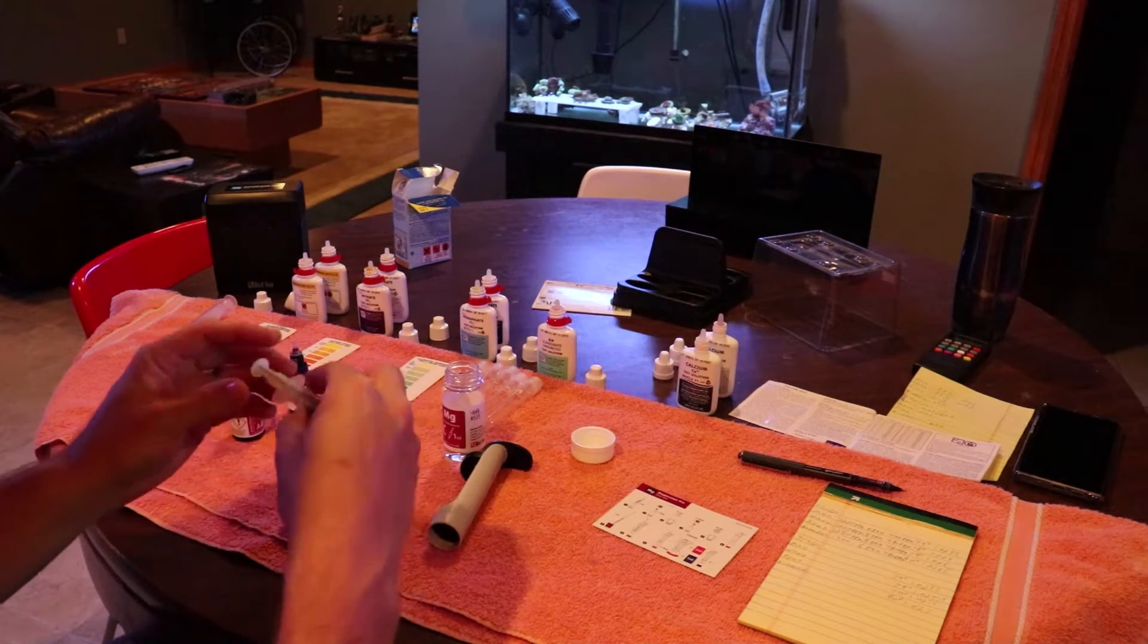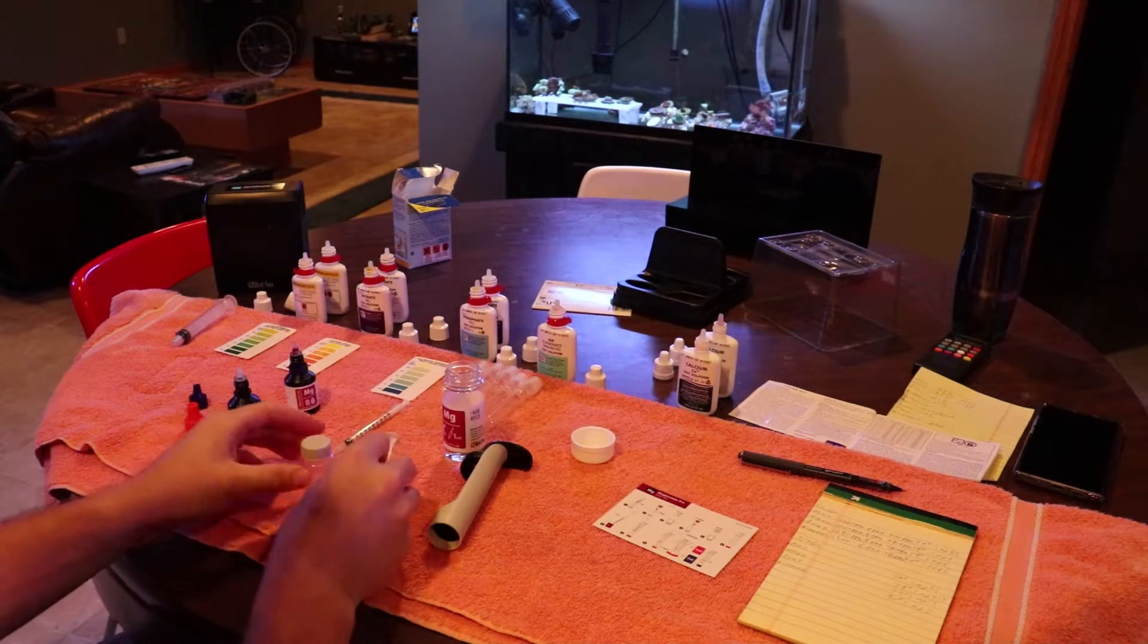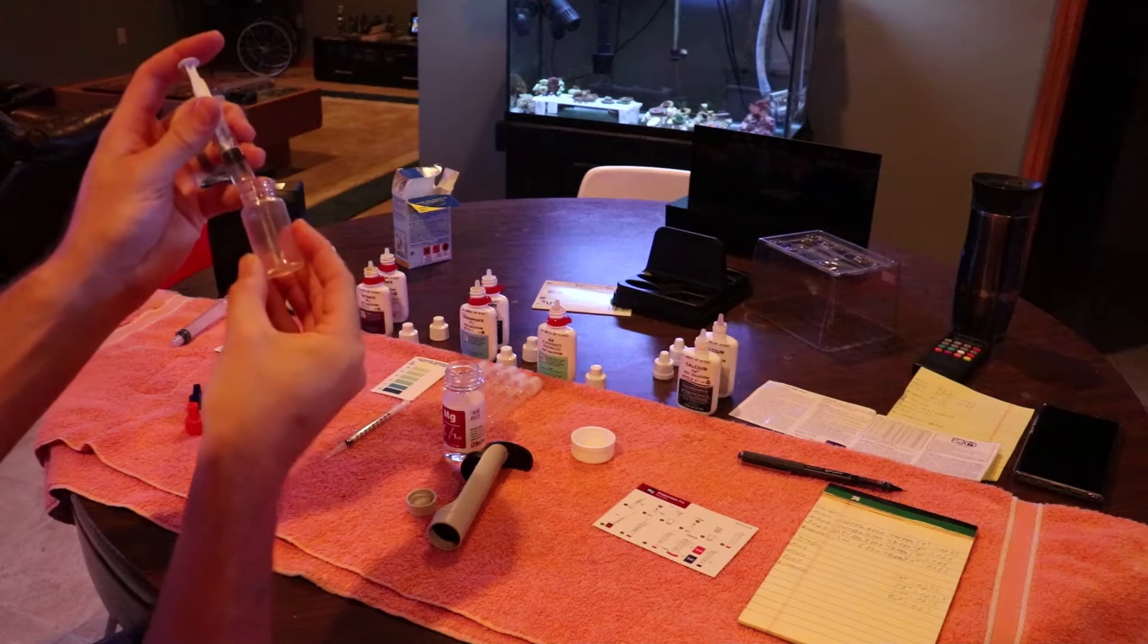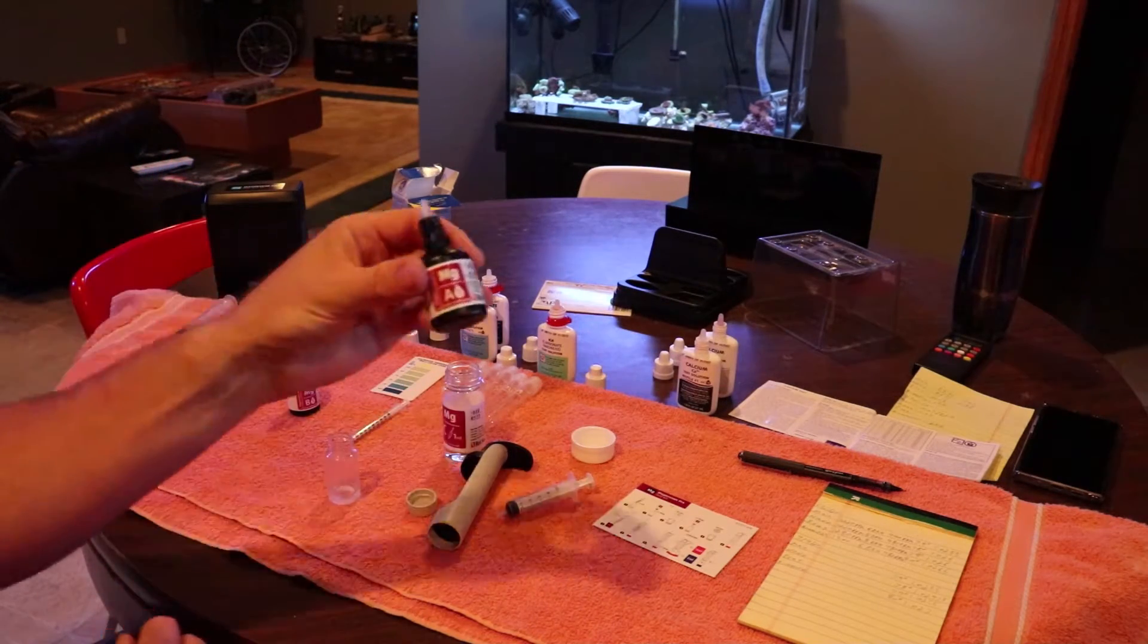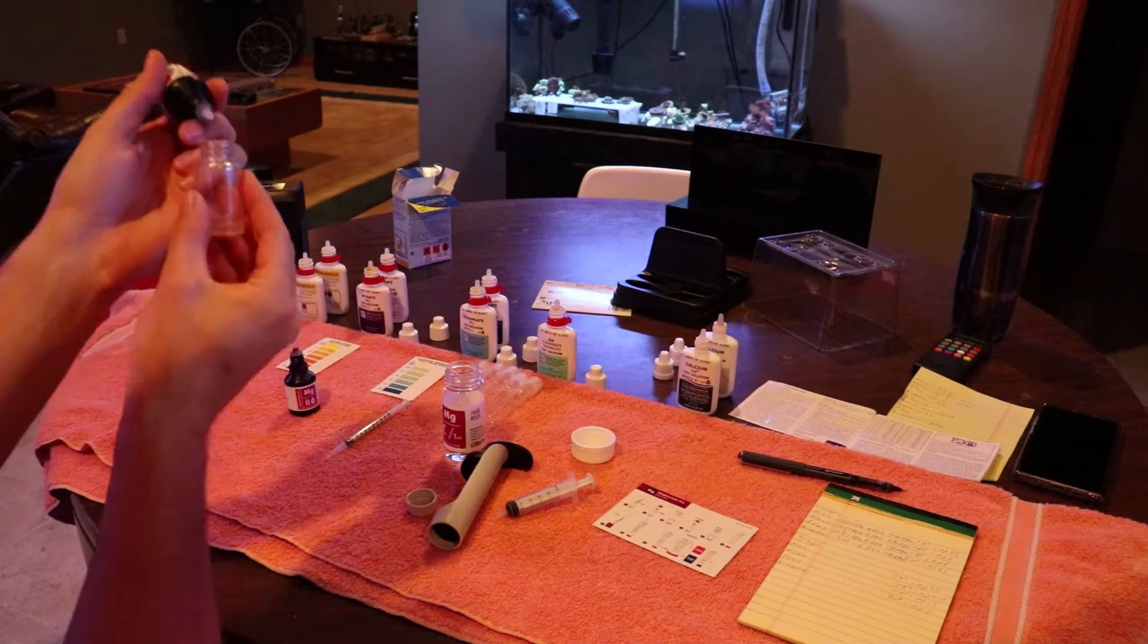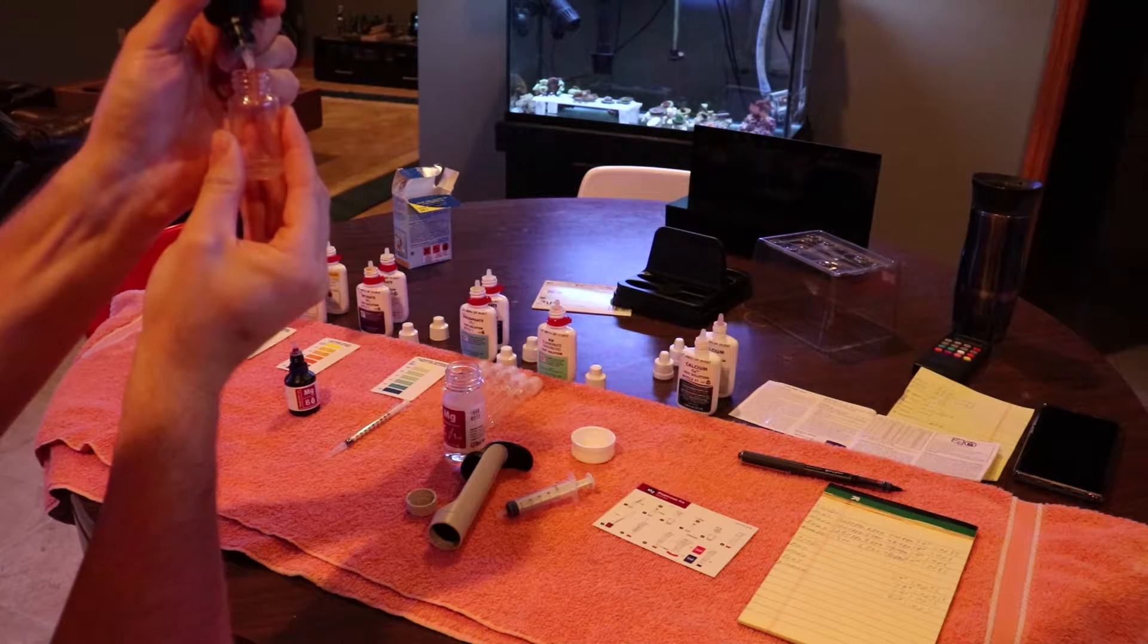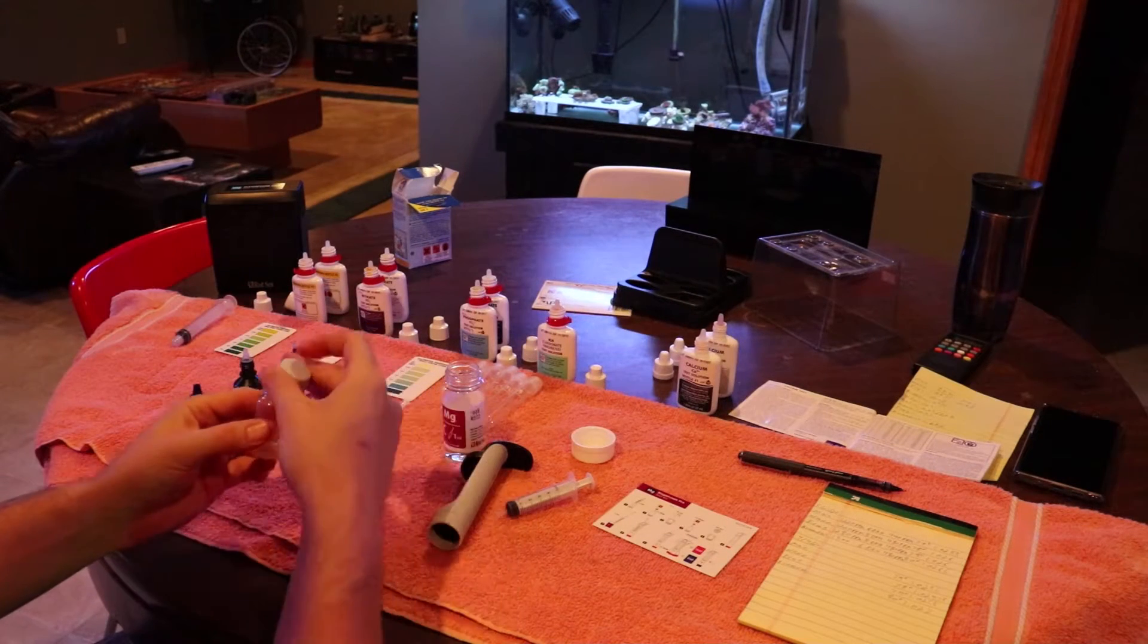What you're going to do is take your syringe and get two milliliters of water from your aquarium. Fill that syringe to the two milliliter mark and put it in your jar. You want to try to be as accurate as possible. Once you get your aquarium water in the jar, you're going to add five drops from reagent bottle A. Add a drop and give it a little shake.